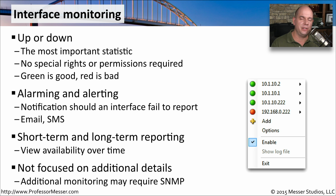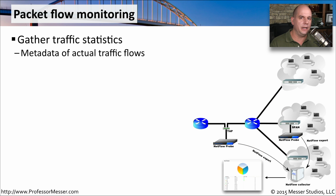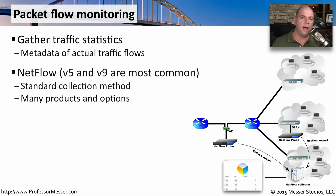If you need more detail than just whether the device is up or down, you may want to look into other monitoring technologies like SNMP, which can give you information about interface utilization, errors, and much more. It's often useful to get an understanding of exactly what's running over the network, and there are a number of packet flow monitoring technologies that can do exactly that. A very popular way to do this is with a technology called NetFlow. NetFlow version 5 and NetFlow version 9 are the most common ones, and it's designed to look at traffic flows across the network and provide detailed metrics about exactly what's running over your network links.